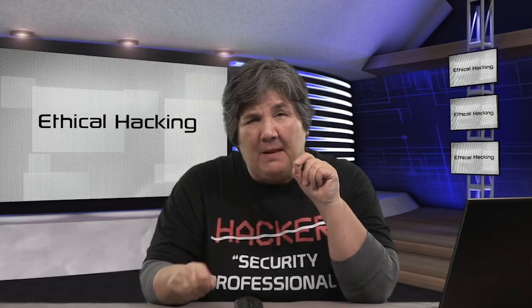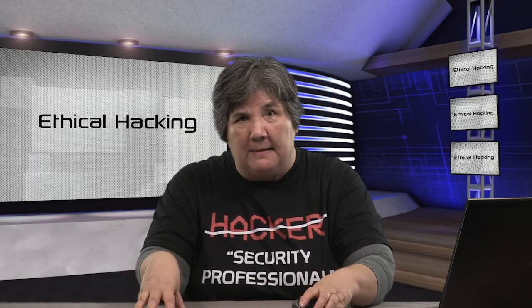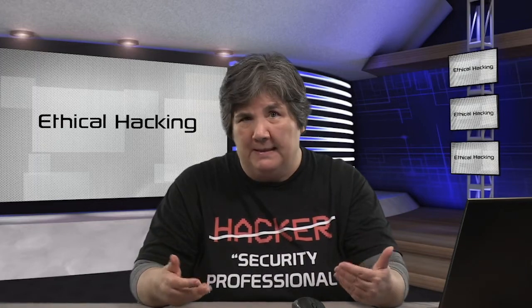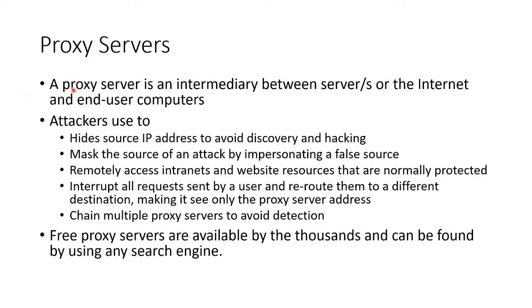But in hacking, we use proxies for a whole other method — as relays to hide the original source. If we are an attacker with a target, rather than attacking the target directly so they can trace it back to us, we'll bounce it through a proxy, and probably bounce it through several proxies, so it's hard to trace back ultimately to us. That's what an anonymizer does on the internet.